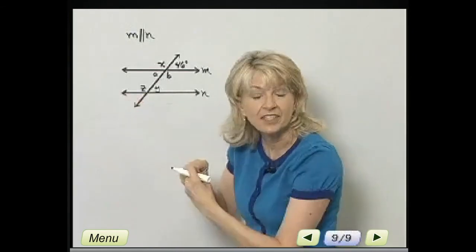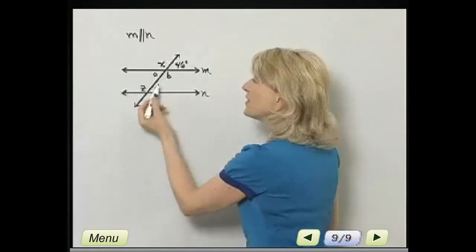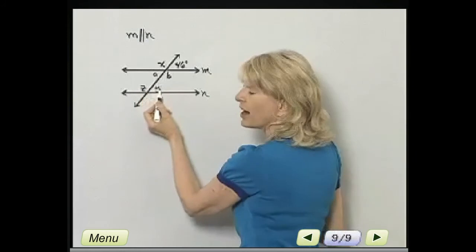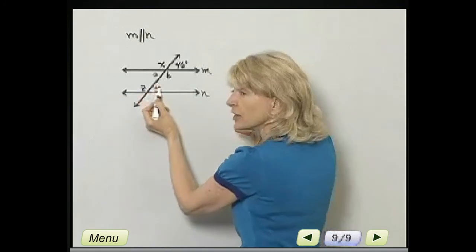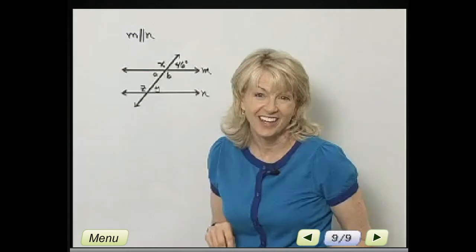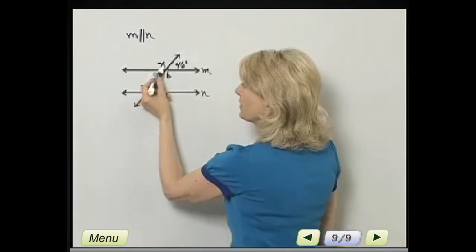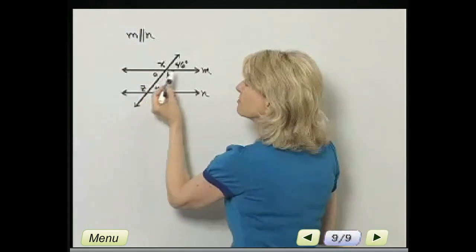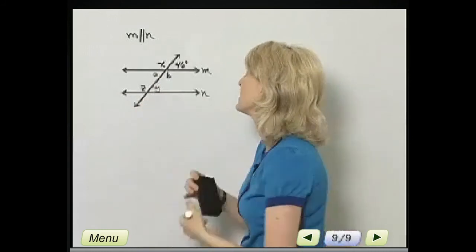And then alternate interior angles, that would be A and Y. They alternate, but they're interior angles. And B and Z are alternate interior angles. I do know that A and Y have the same measure. B and Z have the same measure.